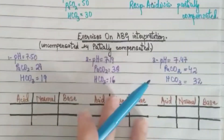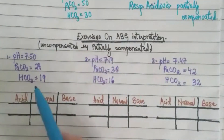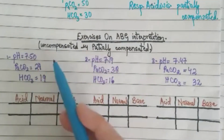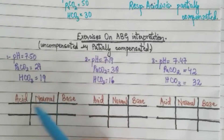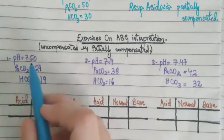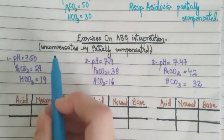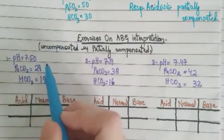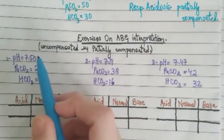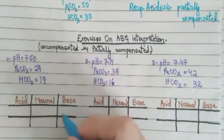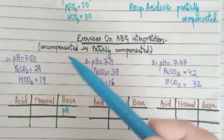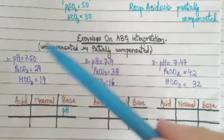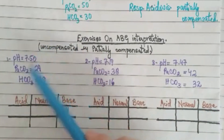So we have pH 7.50, and the normal pH range is 7.35 to 7.45, so 7.50 is more than that. When the value is more than the normal range, it is on the alkalosis side, so we place the pH on the base side. The partial pressure of carbon dioxide is 24, which is less than the normal range of 35 to 45.